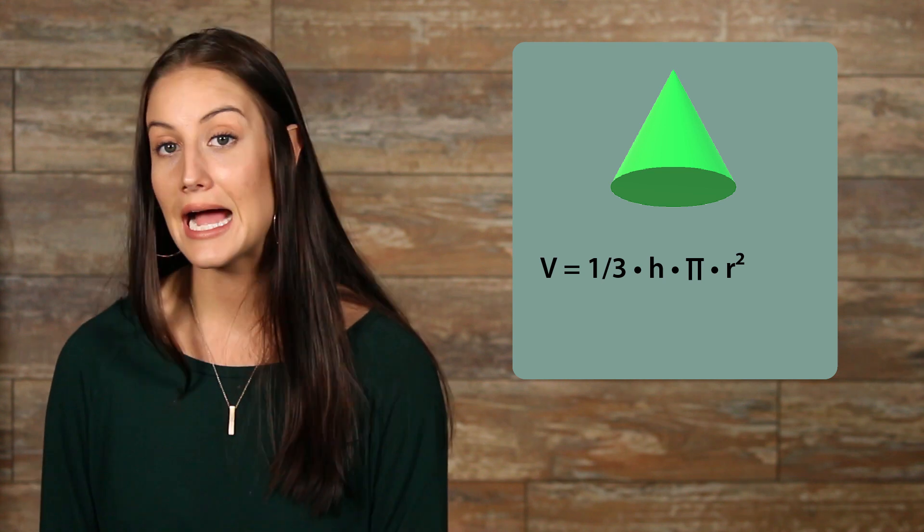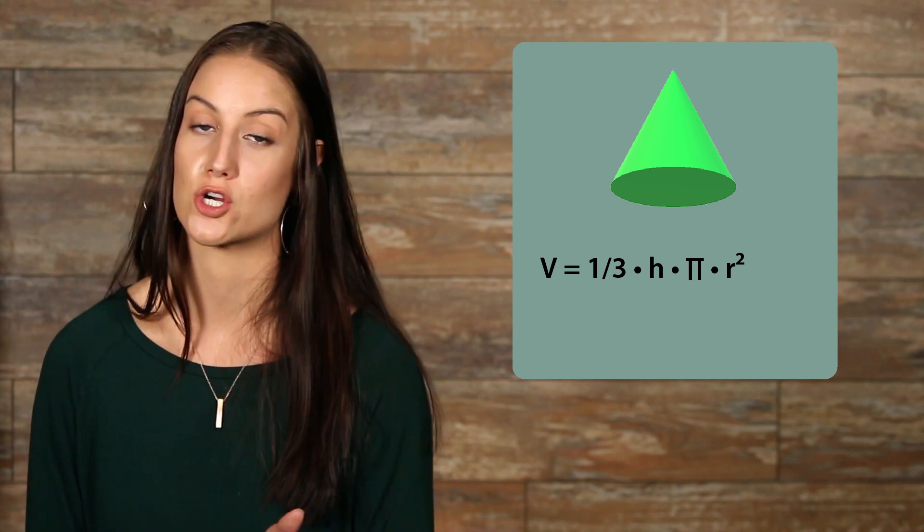Volume of a cone. The formula for volume of a cone is very similar to the formula for the area of a circle. However, there are two things added to the formula. To find the volume of a cone, you multiply times 1 third and times the height, because now you have a height because you're working with a three-dimensional shape. This makes the formula for the volume of a cone, volume equals 1 third times height times pi times r squared.